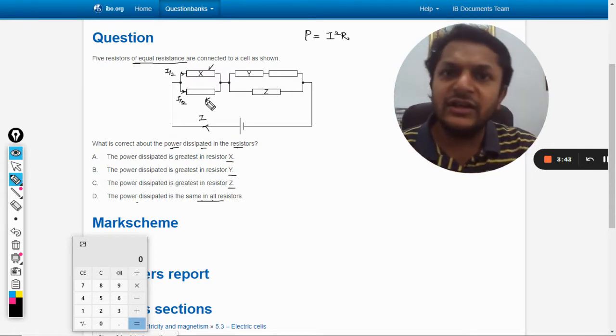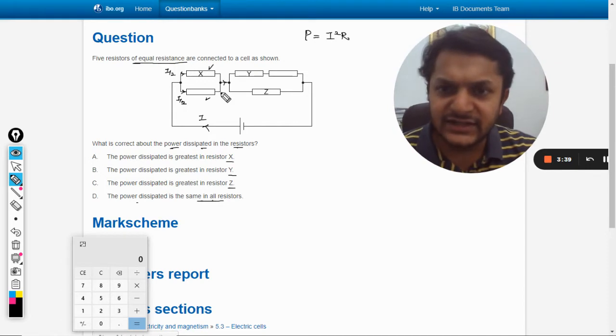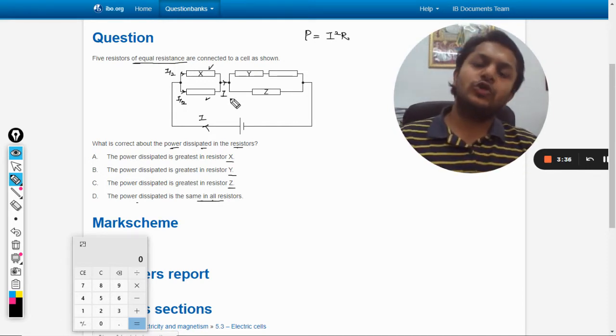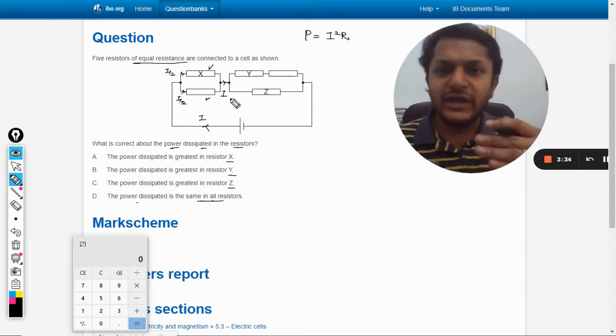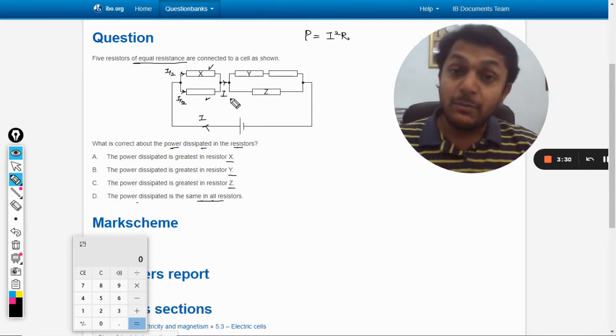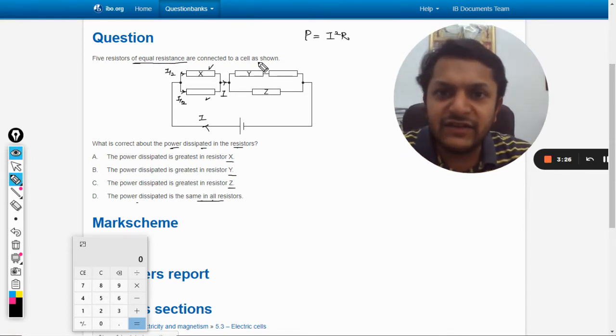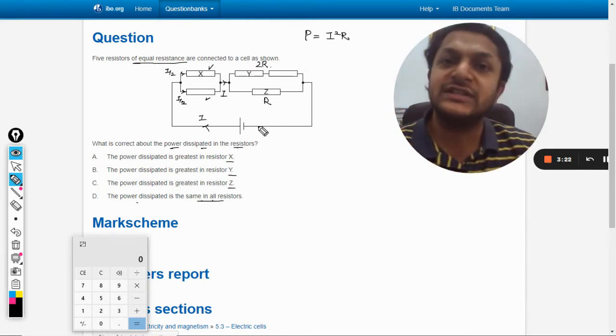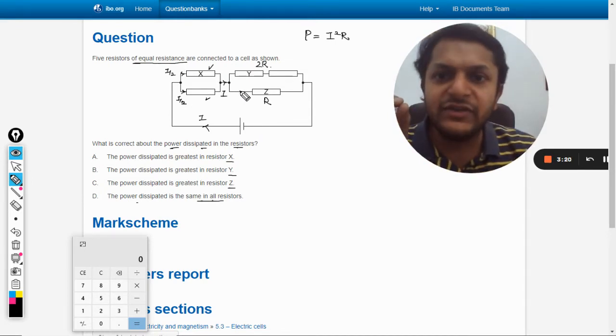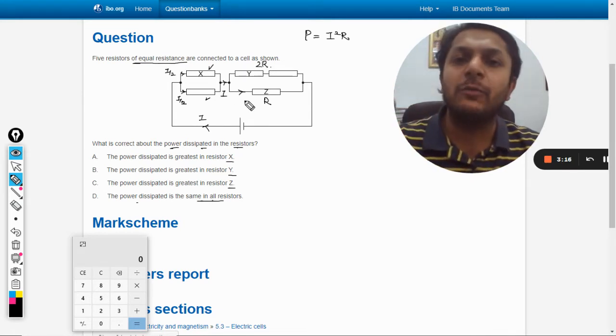More is the current, more is the power. Now the currents add up and the total current becomes i. Now it is again splitting into two branches, one is Y, another is Z. But now the resistances are not equal. This branch is having the total resistance 2R and this branch is having total resistance R. So more current will be going from Z and lesser current will be going from Y.